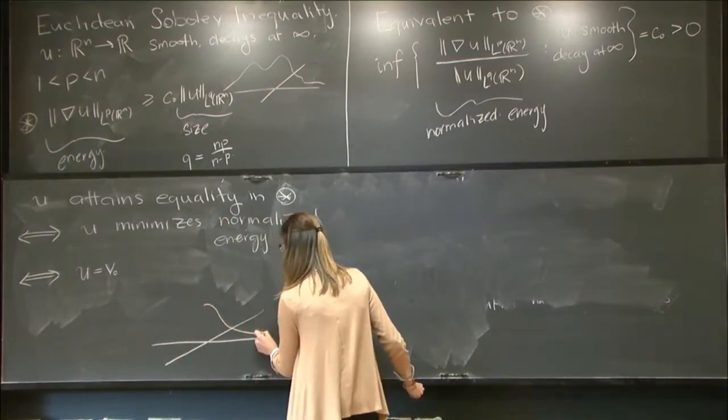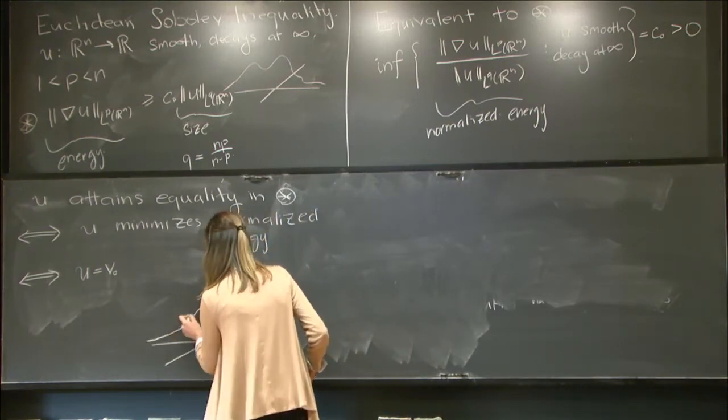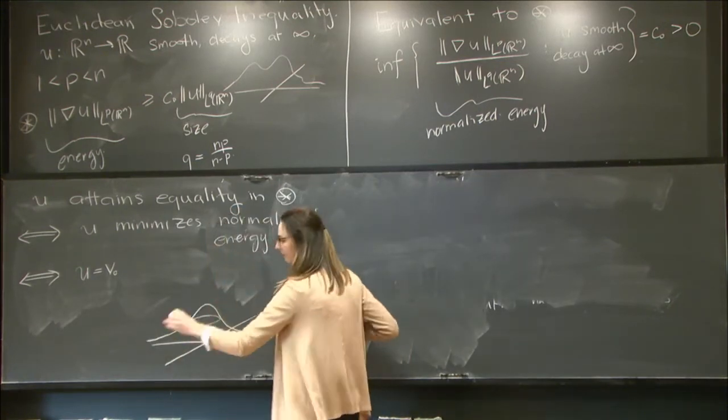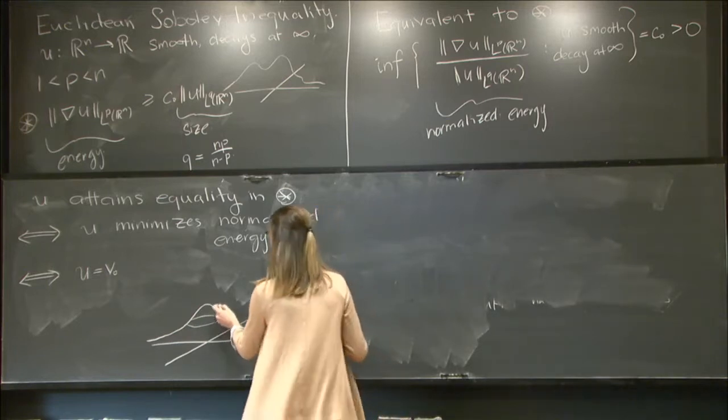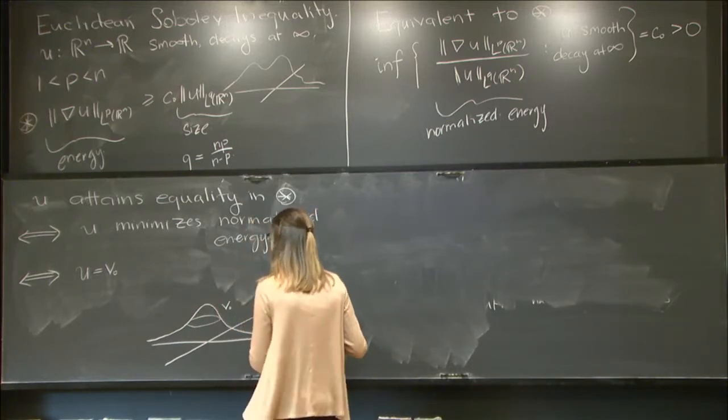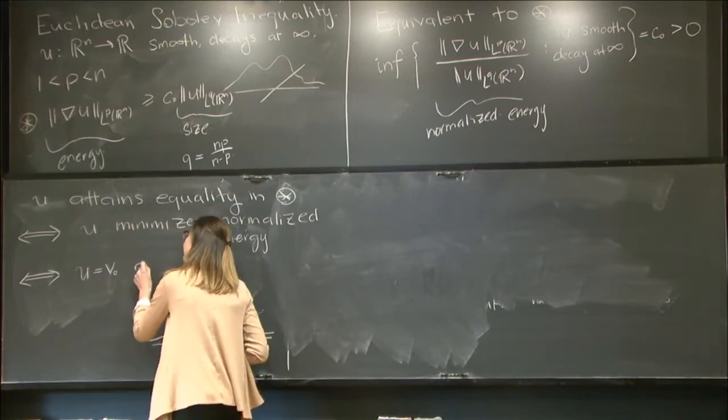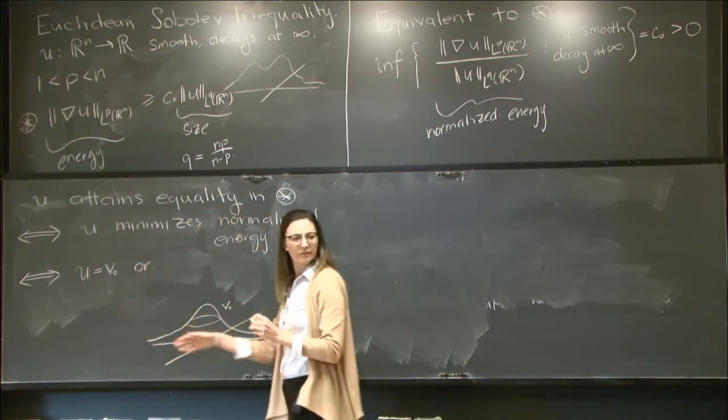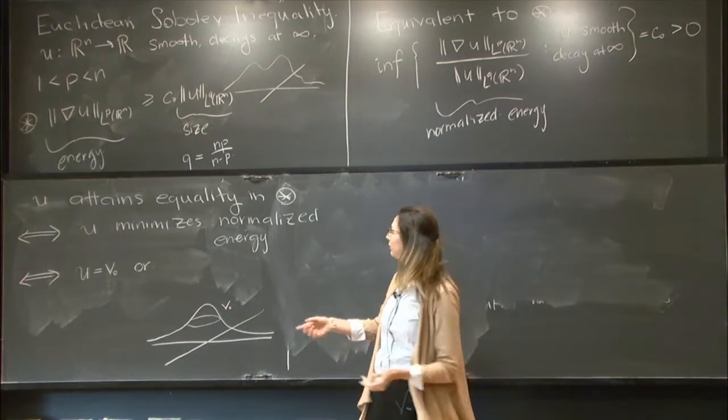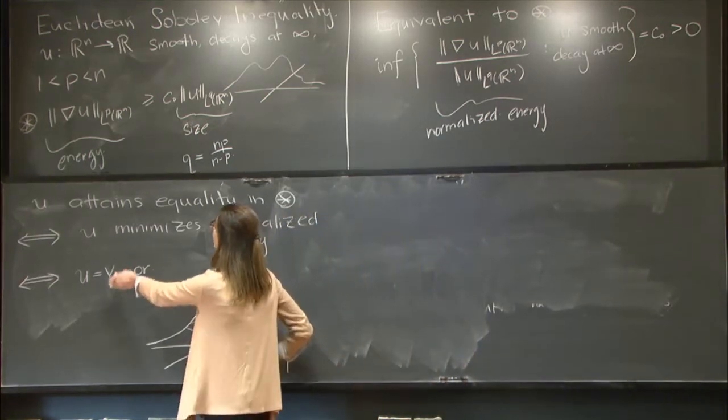it's radially symmetric and decreasing. It's not compactly supported, but it vanishes polynomially at infinity. So we have equality—I sort of have a partial sentence here. If u is equal to this function, or once I tell you that this v0 is an equality case in the Sobolev inequality,